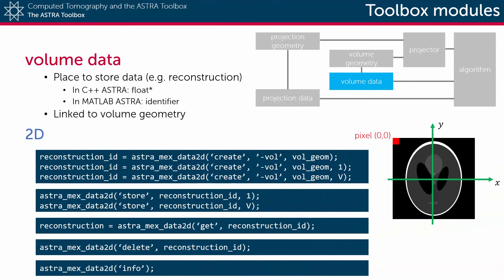For two-dimensional data sets the function relating to this module is called astra_mex_data2d. Its first argument then defines which operation is to be performed.